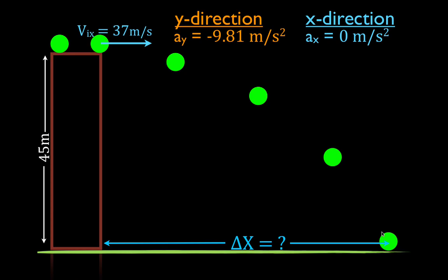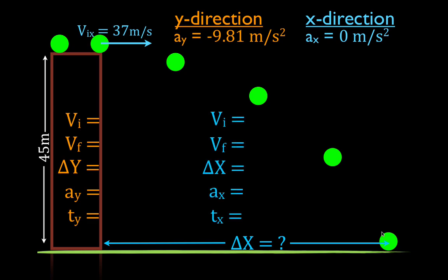In order to solve this problem, we're going to have to use our kinematic equations. What I like to do first is, for the y-direction and also for the x-direction, write down all five of the variables contained in the kinematic equations: initial and final velocity, change in position, acceleration, and time. I have that for the y and for the x-direction. We're going to fill in what we know, what we don't know, and what we're looking for.